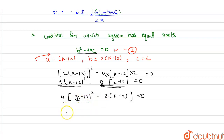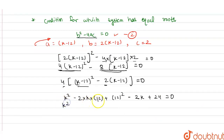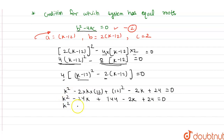Now open the bracket using the identity (a minus b) squared equals a squared minus 2ab plus b squared. We get k squared minus 24k plus 144 minus 2k plus 24 equals zero. Combining like terms: k squared minus 26k plus 168 equals zero.